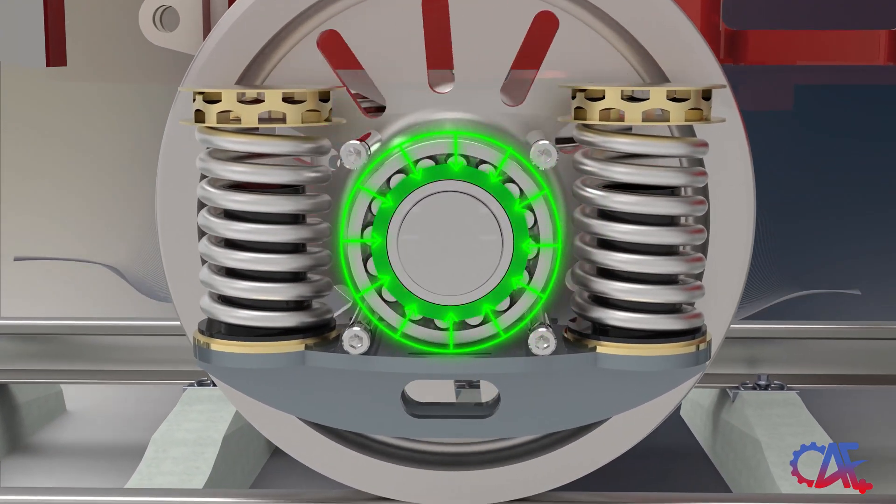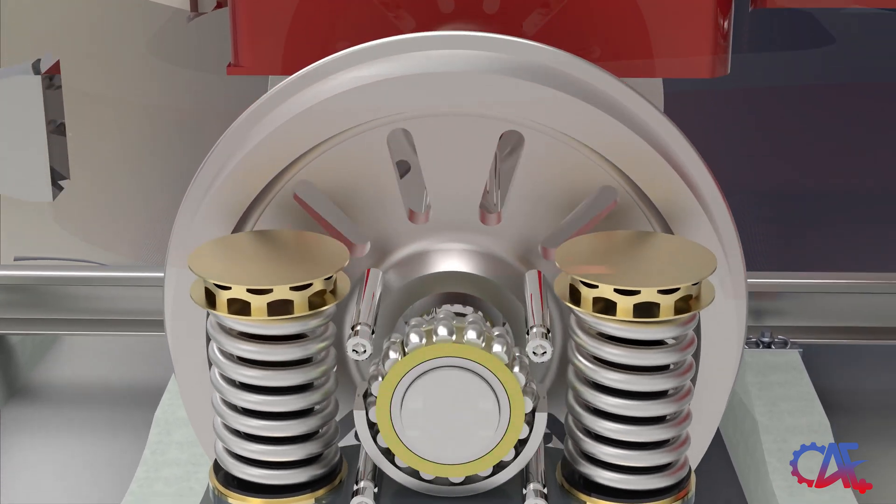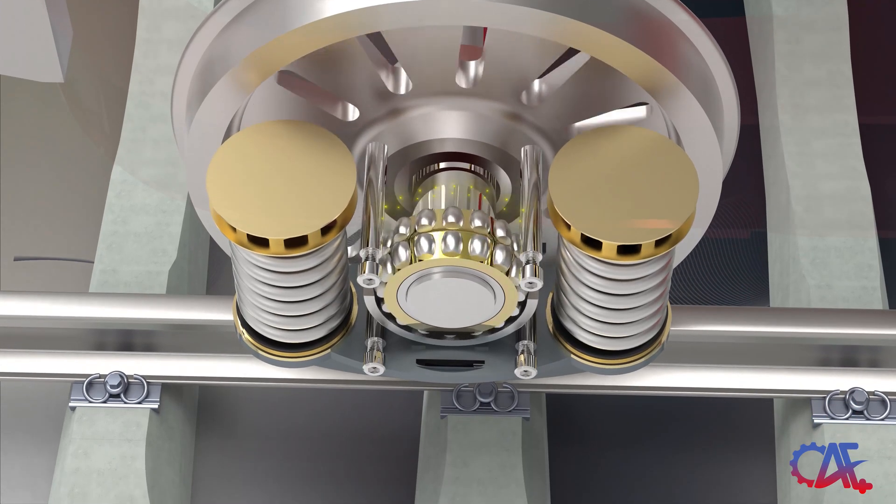These conditions introduce a combination of significant radial loads, illustrated by green arrows, and substantial axial loads, shown by yellow arrows in the animation.